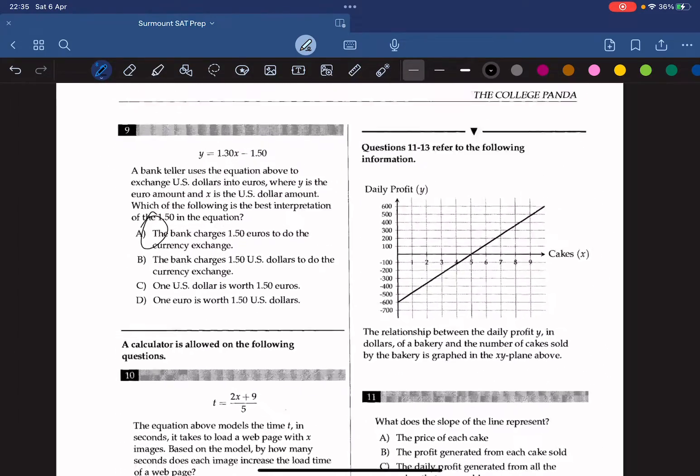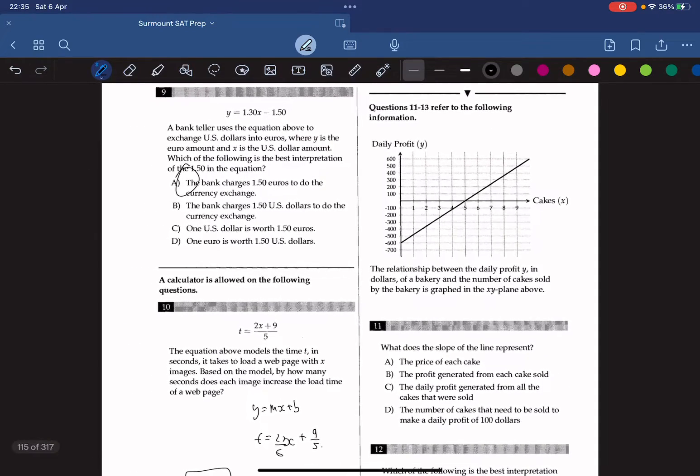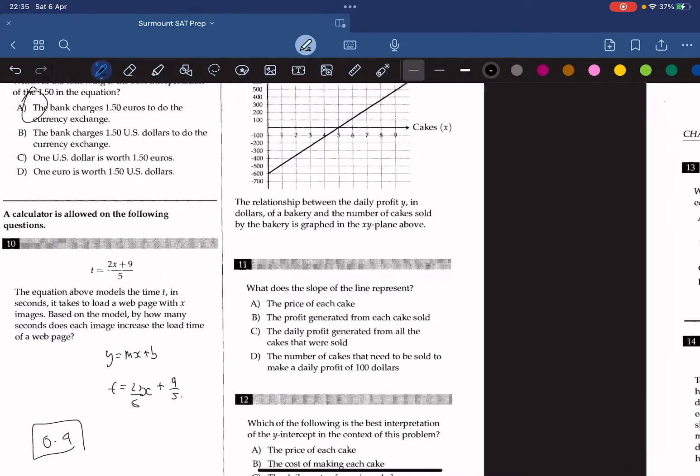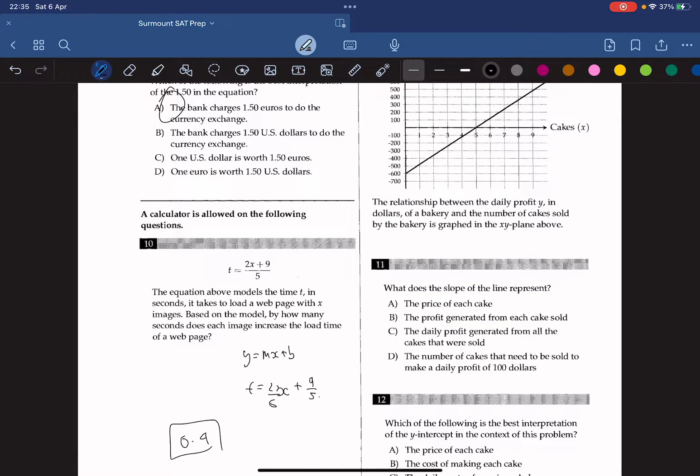Questions 11 through 13 refer to the following information, which is the graph showing the relationship between daily profit of a bakery and the number of cakes sold by the bakery. What does the slope of the line represent? We know that the slope of the line is the change in y over x, so it's the change in daily profit over cakes sold. So the answer should be B.